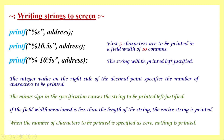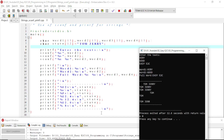If we use a format specifier with a decimal point and specify 0 after it, then nothing will be printed. This is something to keep in mind when working with formatted string output.